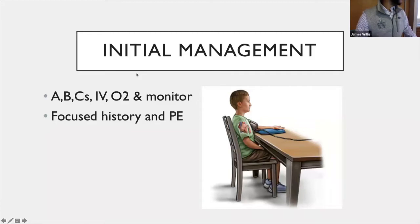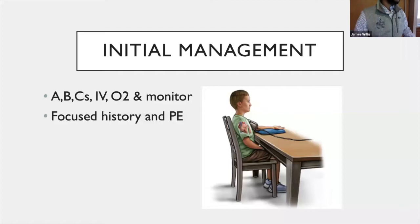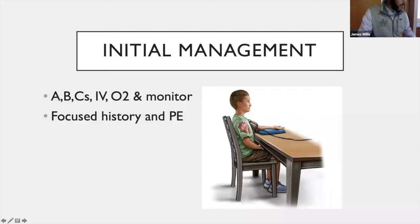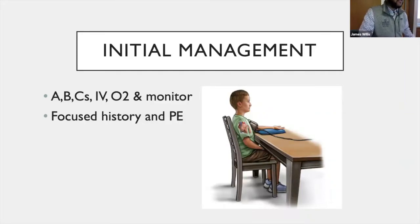If you have a hypertensive patient, you need to verify the blood pressure measurement. Younger children are often running around and crying, so we don't rely on that first reading. Try to calm them down — the cuff should be on the right arm, the patient should be sitting, and you need the correct cuff size, as one that's too big or too small will cause measurement errors. If needed, do a manual measurement. If they're still hypertensive after all that, proceed with ABCs, IV access, oxygen, and a monitor, and obtain a focused history.